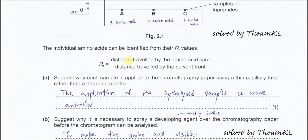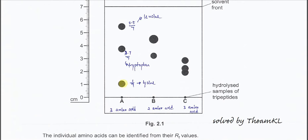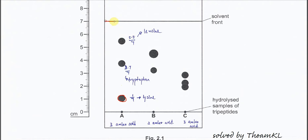So it's the distance traveled by the amino acid spot over the distance traveled by the solvent front. So for example, for this spot, we know that it's around 1 cm. So it's just 1 over 7. So we know that it's actually lysine.